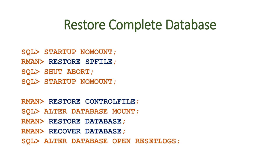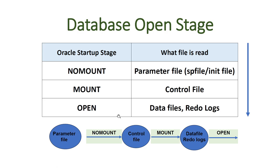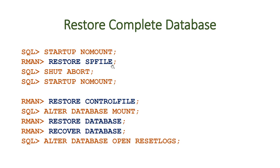For the restoration of your database — if for some reason you dropped the entire database, it crashed, and you don't have the spfile, control file, or data files — these are the steps: first restore the spfile, then restore the control file, then restore the database, recover the database, and open the database in resetlogs mode. The trick is you must create a dummy init file to start the instance in no-mount mode, use that to restore the spfile, then shut down and start up no-mount again using the spfile for subsequent steps.